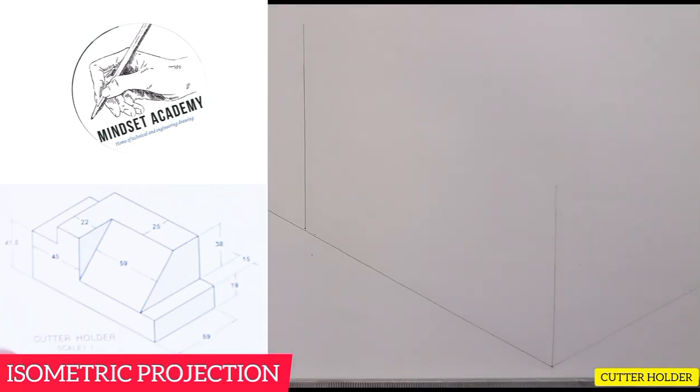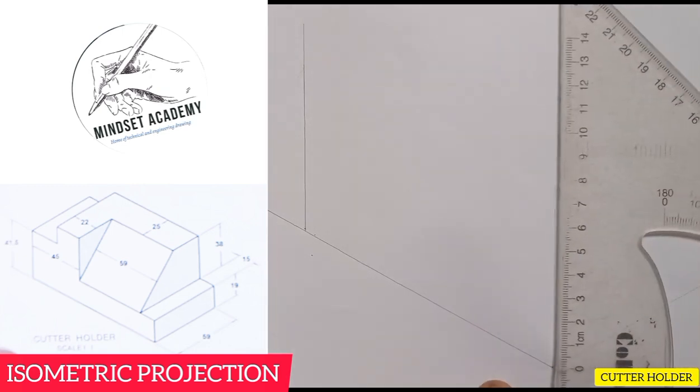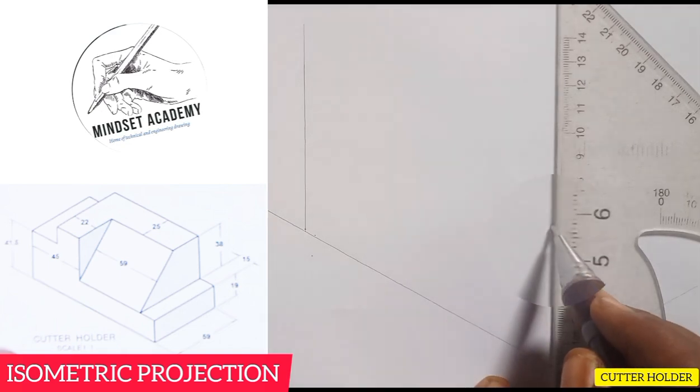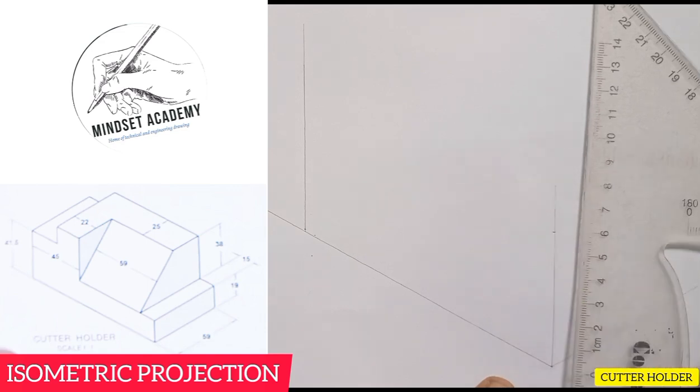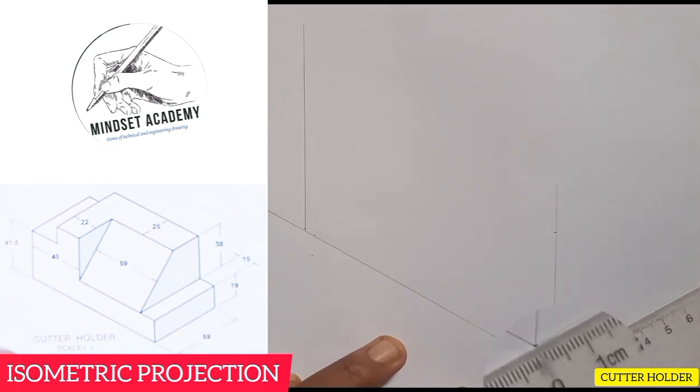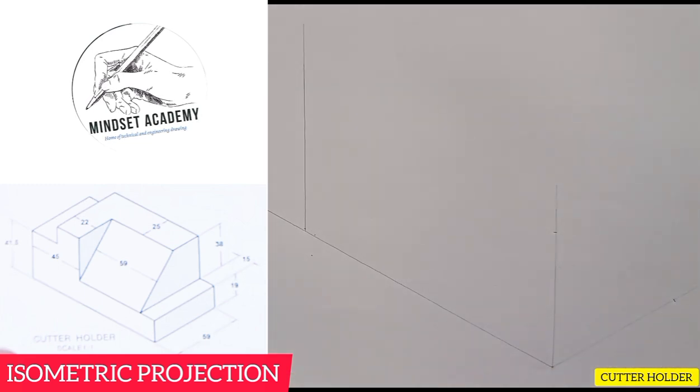Now the next one is the height is given to be 57. How did I come about that? If you add 19 and 38 that is 57. So I am going to measure 57 vertically from this same point here. And the width is given to be 59 as you can see, so I am going to measure 59, 0 to 59, then I will take it off.